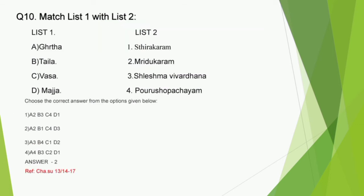Question number 10 is a direct question from Charaka Sutra Snehadhyaya, and the context is properties of Chatur Sneha, which is a 3-star topic. Here, Ghrita is Smritikarana, Taila is Tvakarama, Vasa is Paurushabachaya, and Majja is Shleshmavivarthana. The correct answer is option 2.